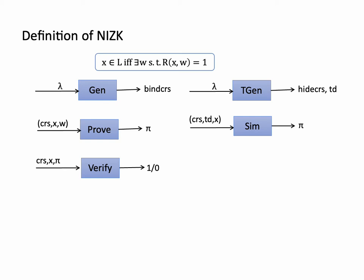Let's briefly recall the definition of NIZK. In NIZK, the prover wants to prove that some statement x is in some language L, and there are five algorithms. The setup algorithm outputs some binding CRS, and another setup algorithm outputs some hiding CRS and trapdoor. The prover takes the CRS, the statement, and the witness w, and generates the proof. The simulator simulates the proof by making use of the trapdoor without knowing the witness. The verifier just checks whether the proof is valid.